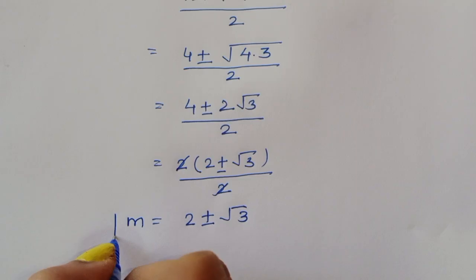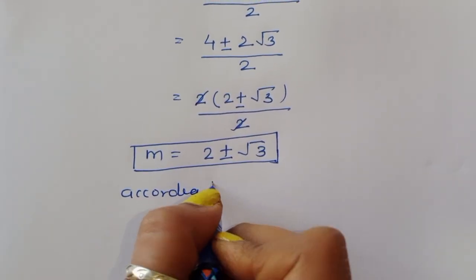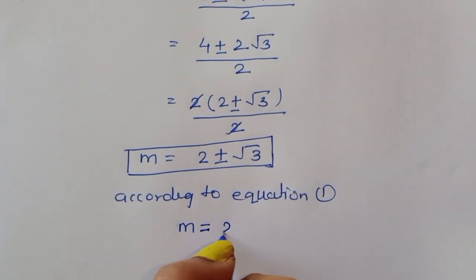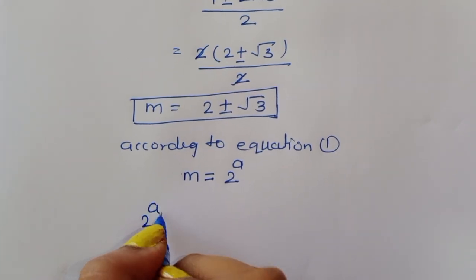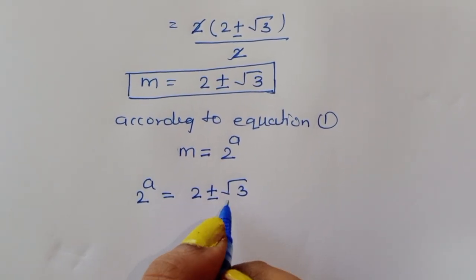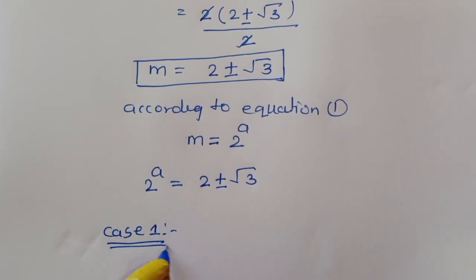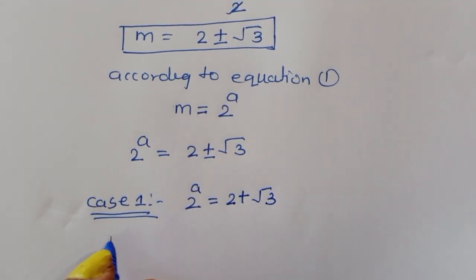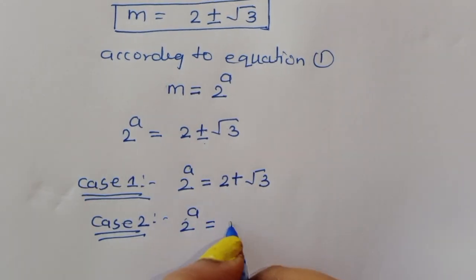This is the value of m. But according to equation 1, we considered m = 2^a. So since m = 2^a and m = 2 ± √3, we can say 2^a = 2 ± √3. This gives us two cases: Case 1: 2^a = 2 + √3, and Case 2: 2^a = 2 - √3.